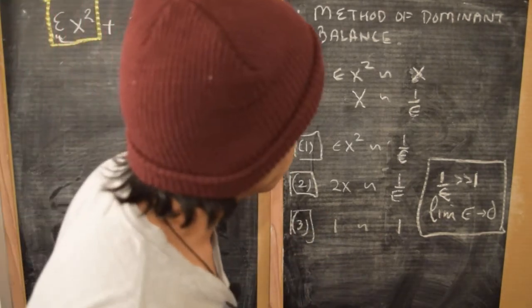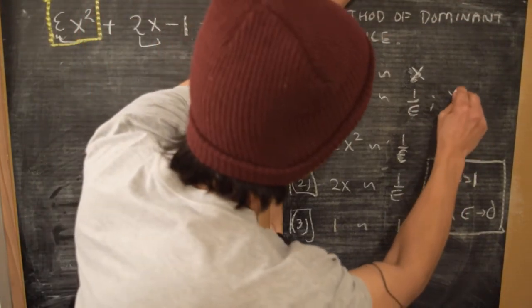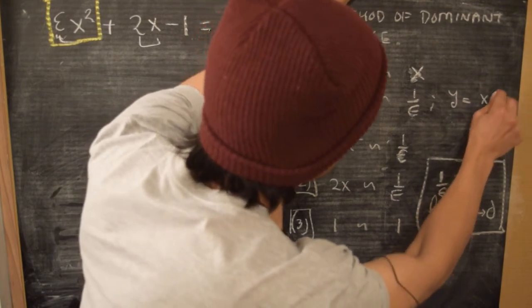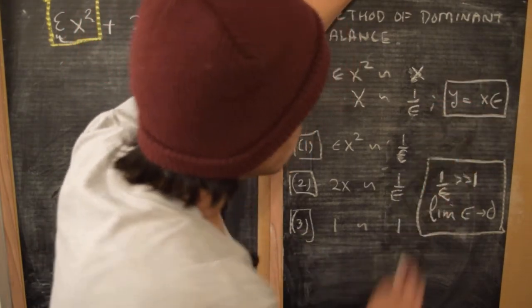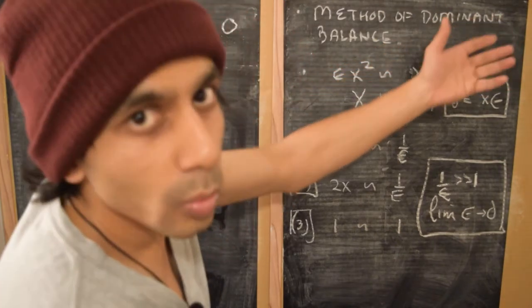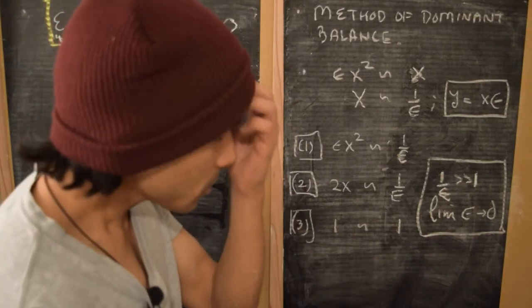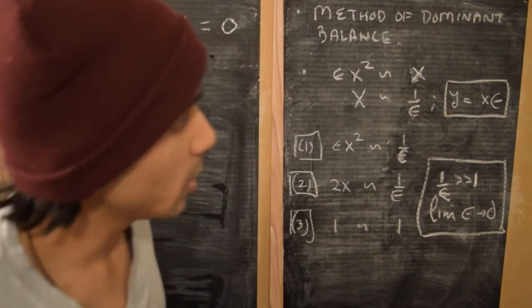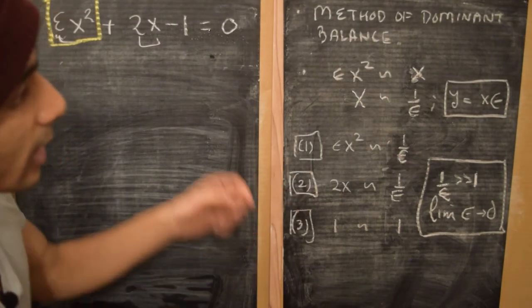If x goes as 1/ε, then we can define a variable y which is of order 1, where y is x divided by 1/ε, which is just x times ε. So if x goes as 1/ε, then y scales as 1, because 1/ε times ε is 1. So y is a term of order 1. Let's substitute for x in terms of y in this equation and see what happens.